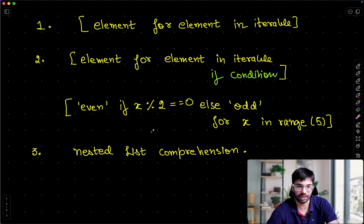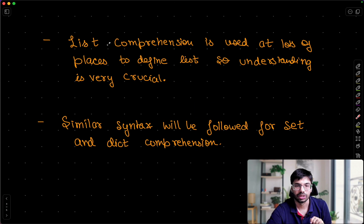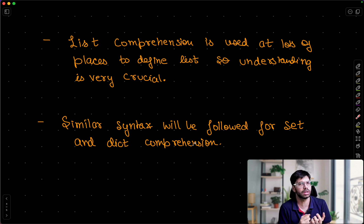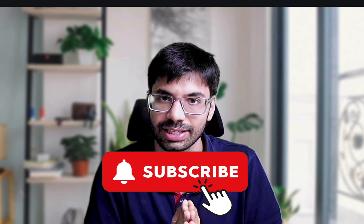I hope this is clear. If anyone has any doubt, let me know. This is an important topic that appears in many places. List comprehension is used at lots of places to define lists, so understanding it is very crucial. A similar syntax will be followed for set and dictionary comprehension as well. Please make sure you work on the nested part, because that is a little tricky sometimes. I'm also going to attach an assignment so you can practice all the concepts of lists, because lists are very analogous to arrays in C++ or Java. Any DSA question involving arrays in C++ or Java gets handled as a list in Python. Please revise all these classes because they are going to be very helpful. Thanks a lot everyone — let's meet in the next class.